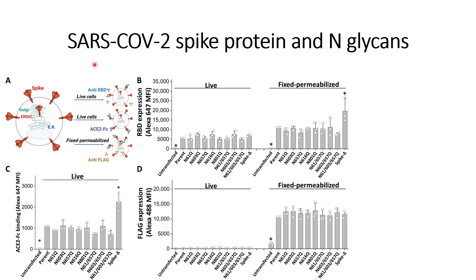In the previous video we understood that mutations in the spike protein at sites such as N61Q, 801Q, 61Q, and 657Q lead to less expression of spike proteins in the cells.